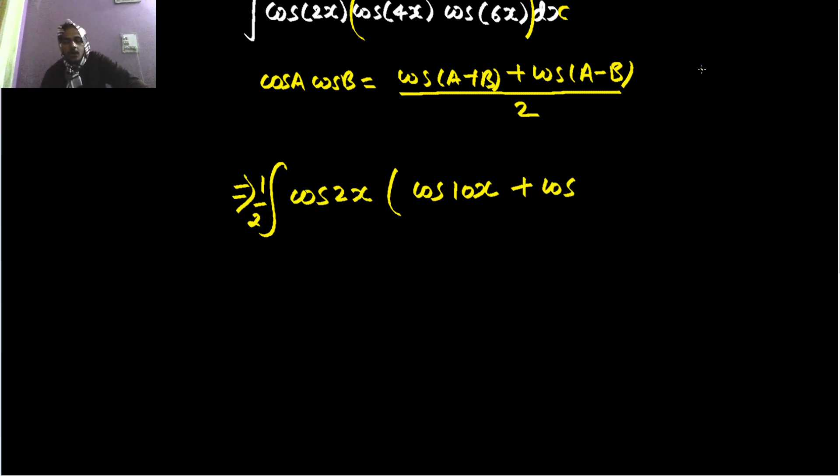So cos 4x plus 6x is cos 10x plus cos 4x minus 6x. That will give you cos of minus 2x, and you know cos of minus theta is cos theta. So that will result in cos 2x only.